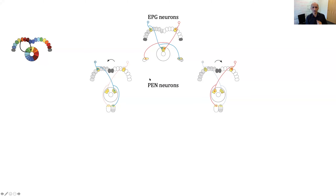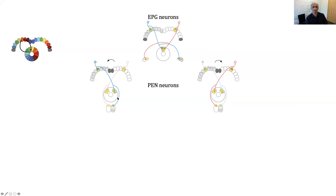Here's the PEN neurons relative to the EPG neurons. EPG neurons from this area of the ellipsoid body go to particular columns of the protocerebral bridge. The PEN neurons come back with an offset — on one side they're offset clockwise, on the other side counterclockwise. In principle, if you want the compass needle to shift when the fly turns one direction, you just activate this side of the protocerebral bridge; to move the other direction, you activate the other side. That is the general conceptual idea for how this might work.